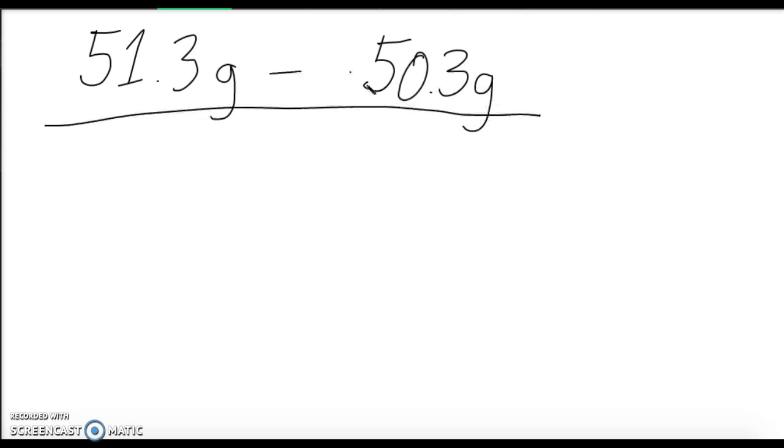So you subtract, divide by what it should have been, which was your 51.3, and then multiply the entire thing by 100.